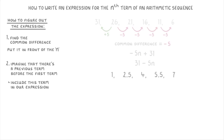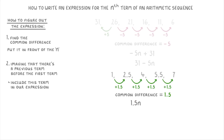For this next one, the common difference is positive 1.5, because it's increasing by 1.5 each time. So we start our expression with 1.5n. Then if we go back by 1 term and subtract 1.5 from the 1, we get negative 0.5. So we have to subtract 0.5 from our 1.5n to give us the expression 1.5n minus 0.5.